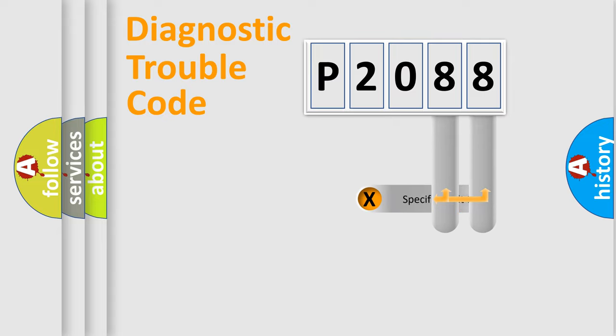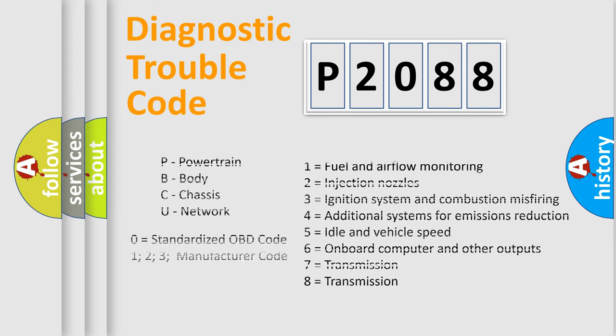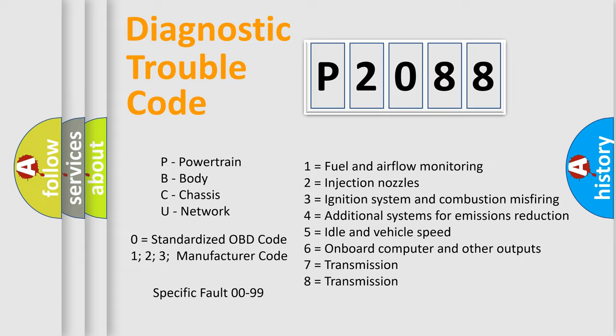Only the last two characters define the specific fault of the group. Let's not forget that such a division is valid only if the second character code is expressed by the number zero.